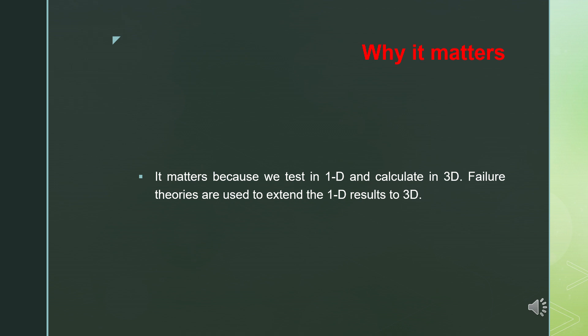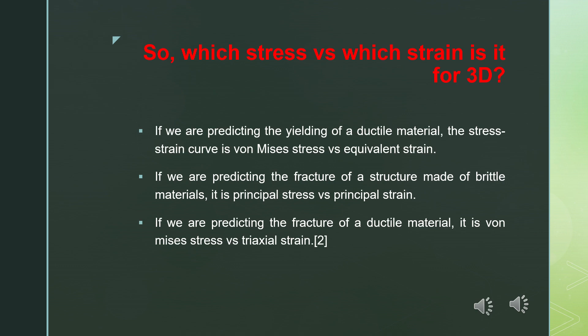Which stress versus which strain to use depends on the situation. If you are predicting the yielding of a ductile material, it is von Mises stress versus von Mises strain. If you are predicting the fracture of a ductile material, it is von Mises stress versus triaxial von Mises strain. If you are predicting the fracture of a brittle material, it is principal stress versus principal strain. These are things I have learned from experience and are not commonly found in basic textbooks.